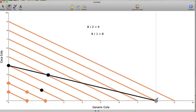And we are going to buy as many of that cheaper good as we can afford, which is illustrated by this point here, where we are purchasing eight bottles of Generic Cola and zero bottles of Coca-Cola.